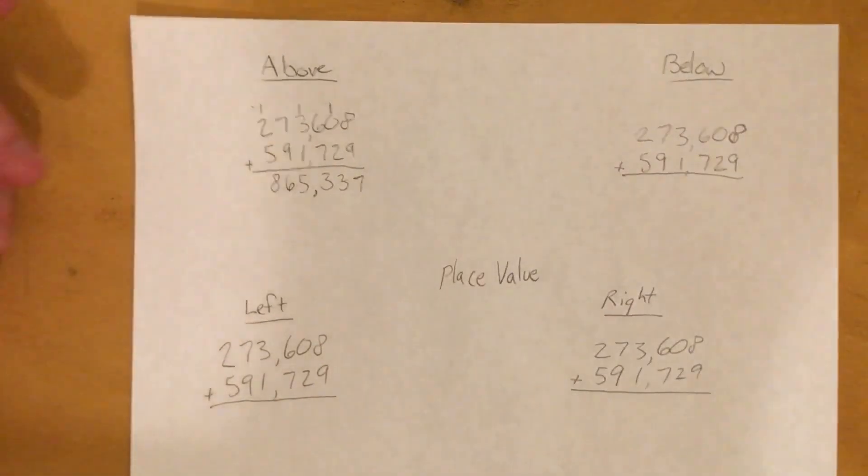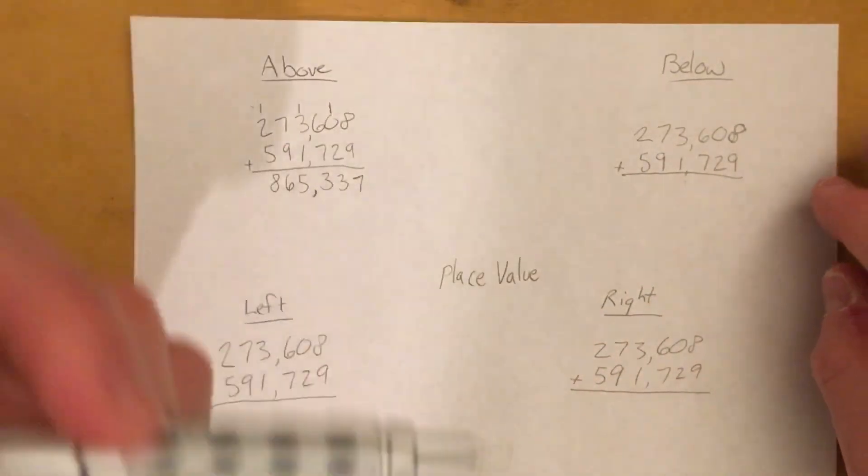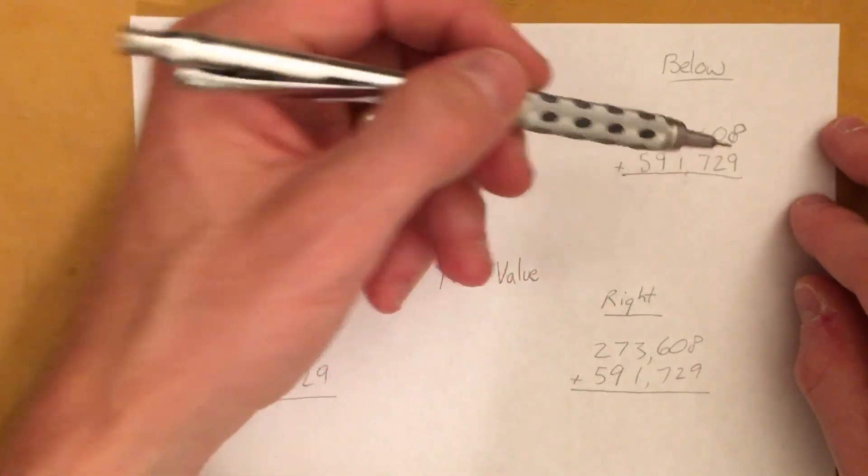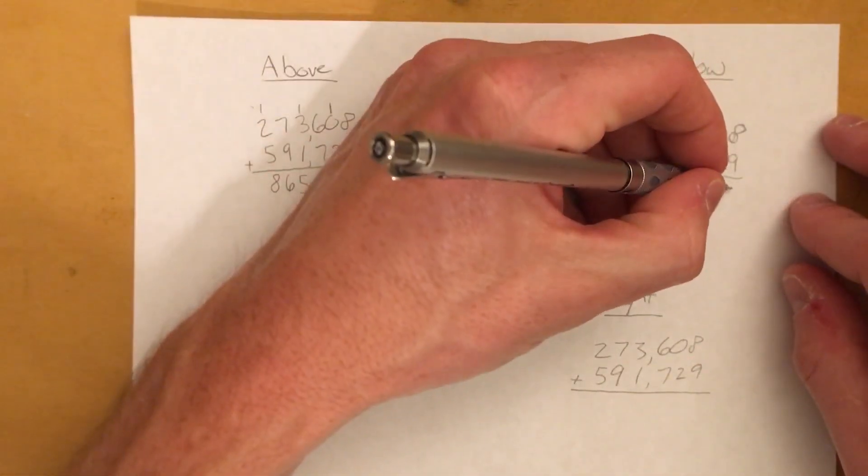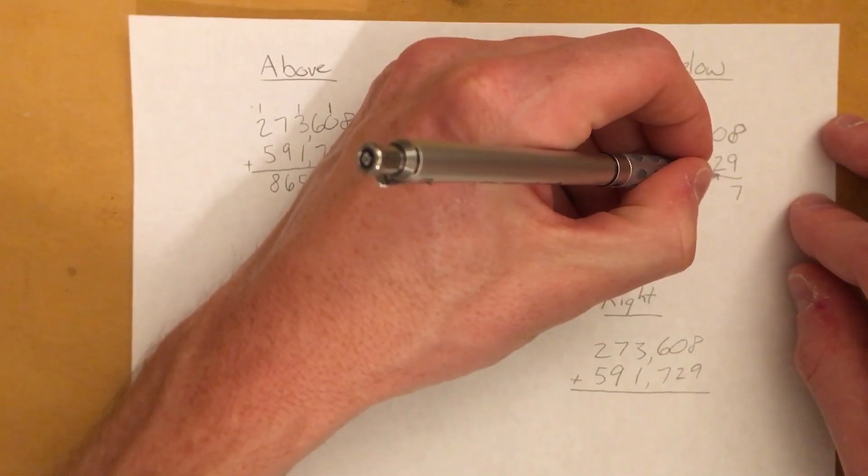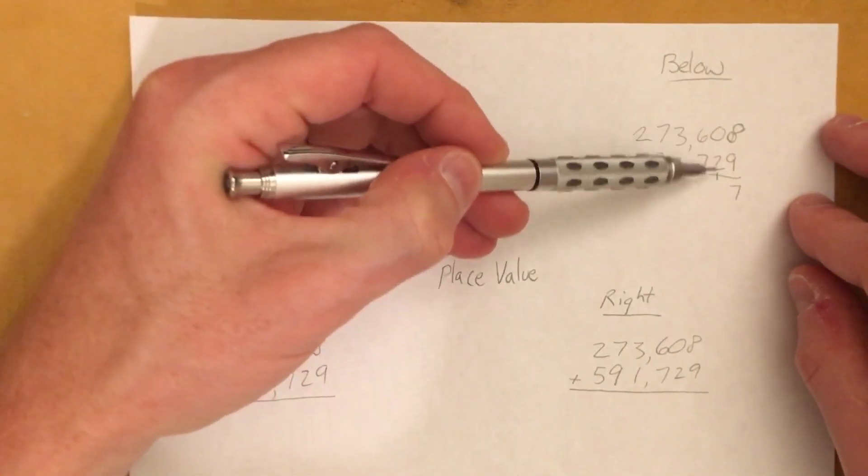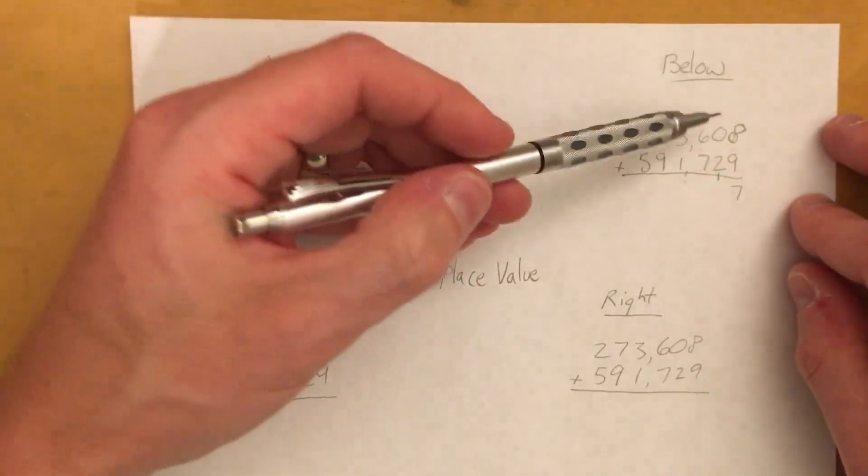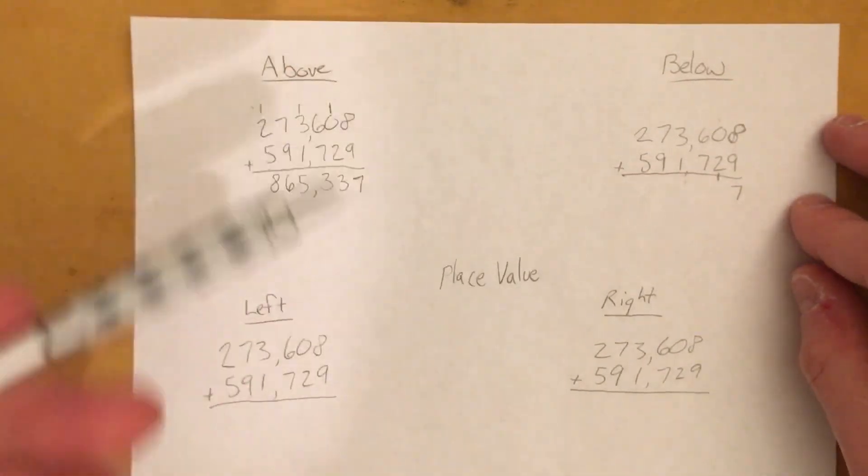Moving on over here, it's very similar except we put the new group below. So it's 8 plus 9 is still 17, so we put our 7. We just put our 1 down here. So it really doesn't matter that much because it's either up here or down here, so whichever way makes more sense to you is perfect.